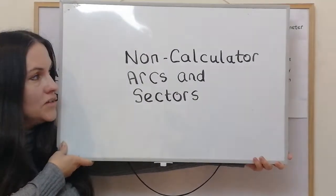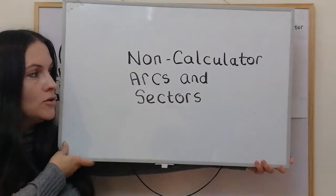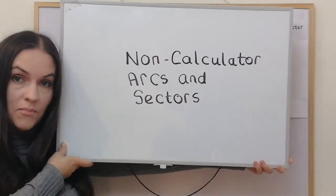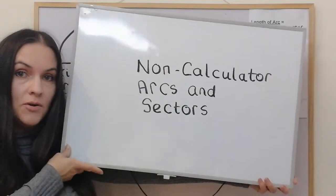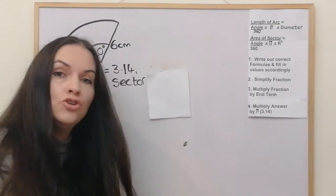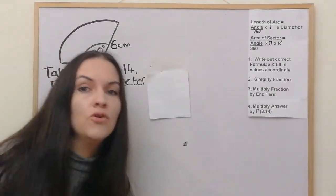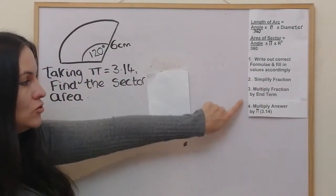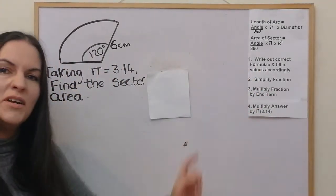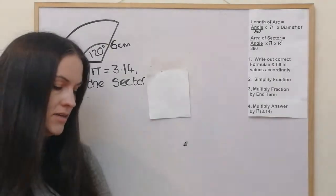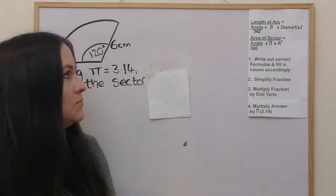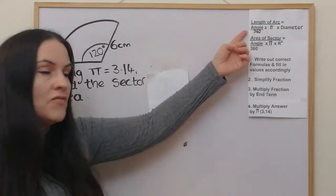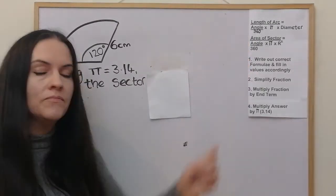Hi and welcome to this week's video where I'm going to be looking at non-calculator arcs and sectors, because this is something I've been asked about before. I've got a four-step guide that we're going to be using, with the two formulas written out for the length of arc and the area of sector.